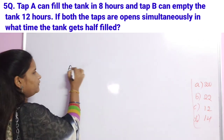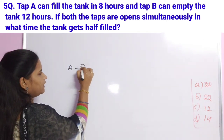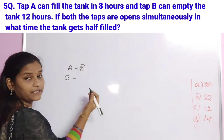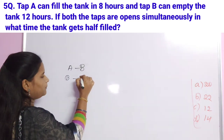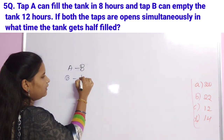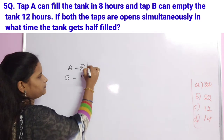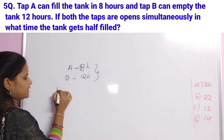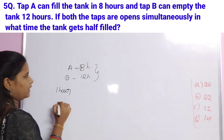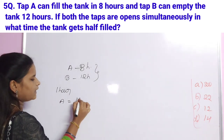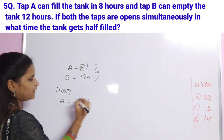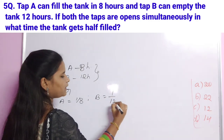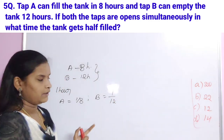A fills the tank in 8 hours, so 1 hour work is 1/8. B empties the tank in 12 hours, so 1 hour work is 1/12 empty. With both taps open simultaneously: 1 hour net work equals 1/8 minus 1/12.